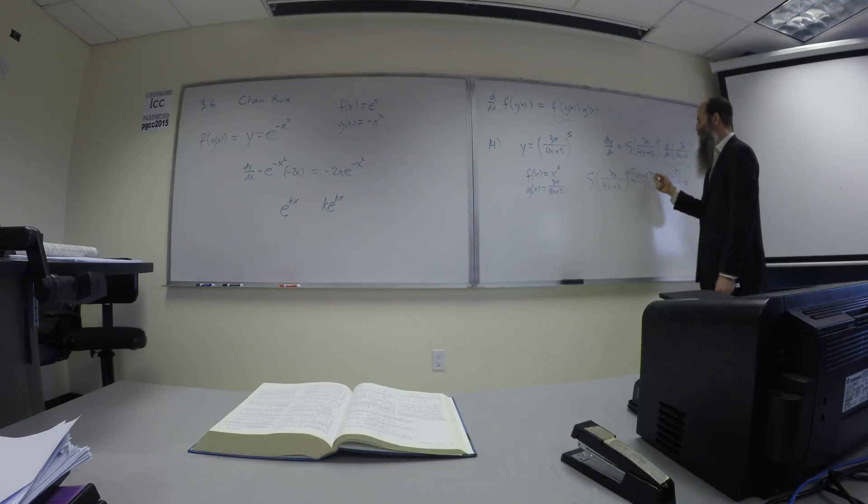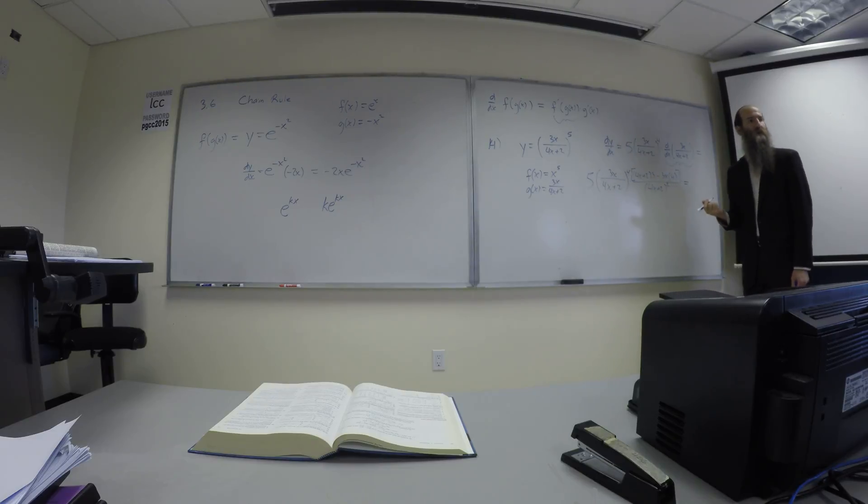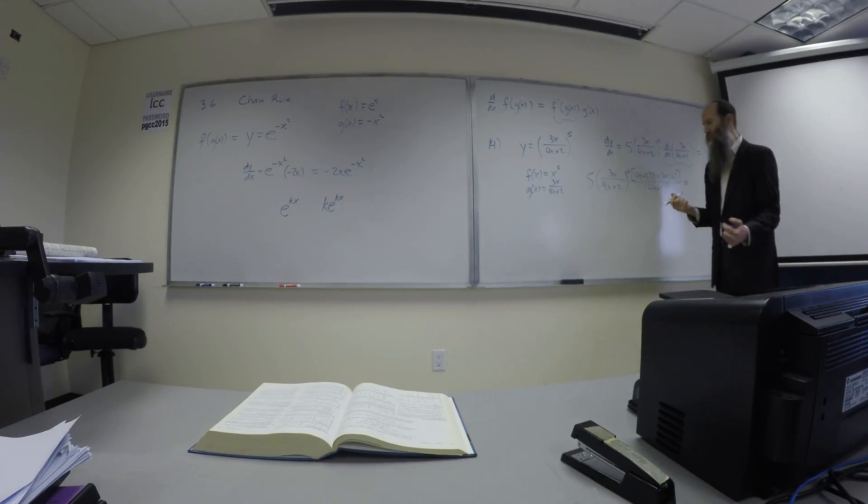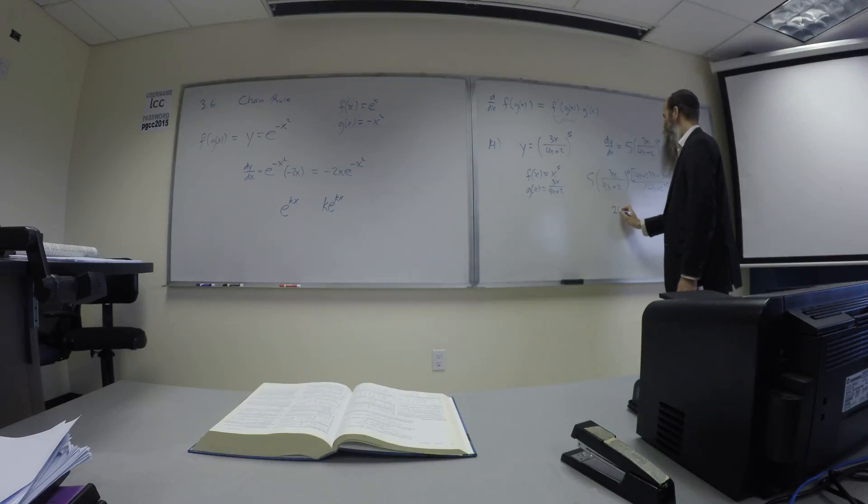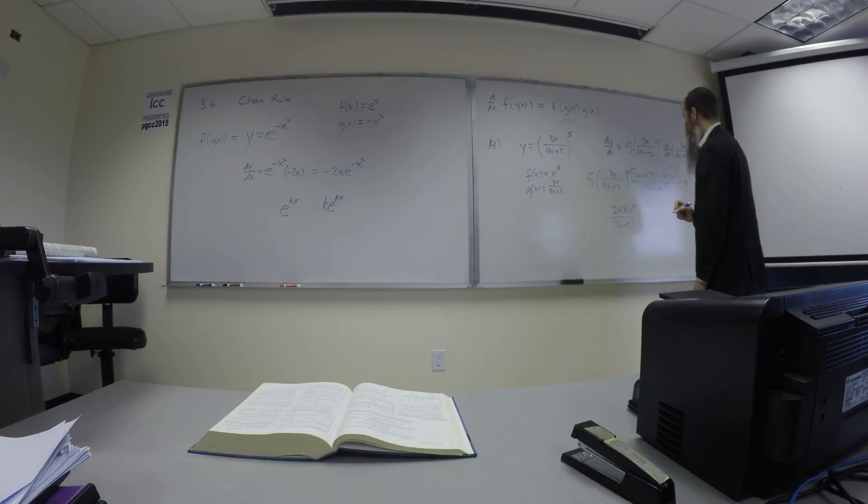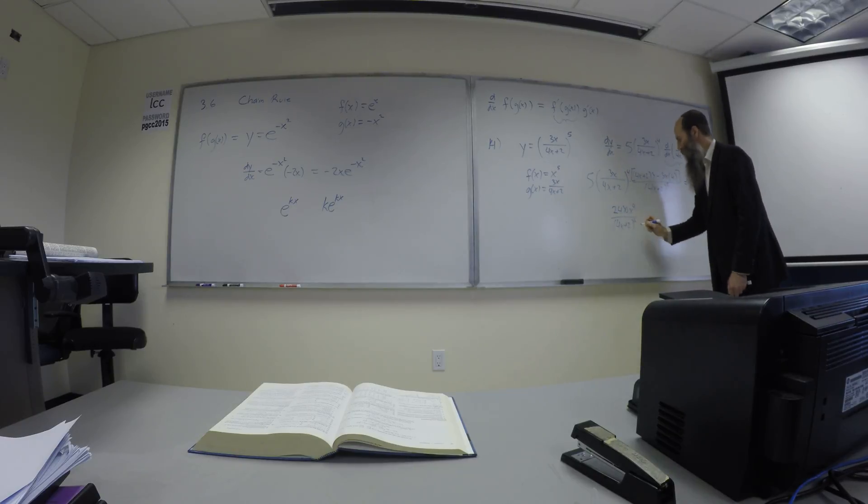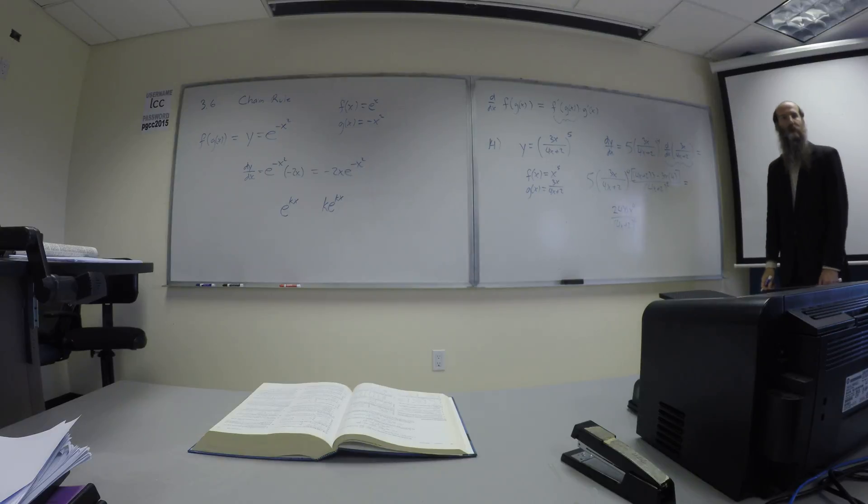And you have the five and the six, so what's 81 times 30? 2430. So we have a number, 2430, we have 3x to the fourth as well, and on the bottom we have 4x plus 2, raised to what power? It's to the fourth, and it's being squared, so to the sixth.